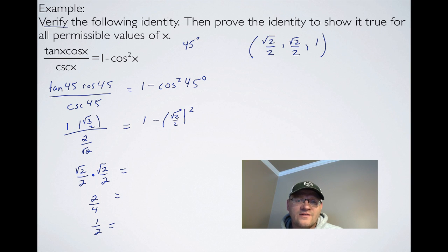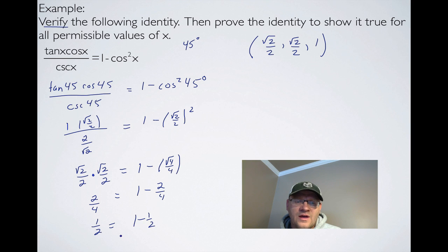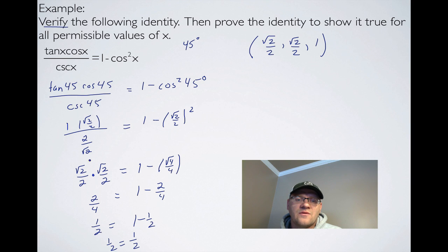On the right-hand side, 1 minus (root 2 over 2) squared equals 1 minus 2/4, which is 1 minus 1/2. So 1/2 does equal 1/2. This is called verifying the identity: picking an angle, plugging it in, and using coordinates from the unit circle to check if both sides are equal. I would always pick an angle from the unit circle — 30, 45, or 60.